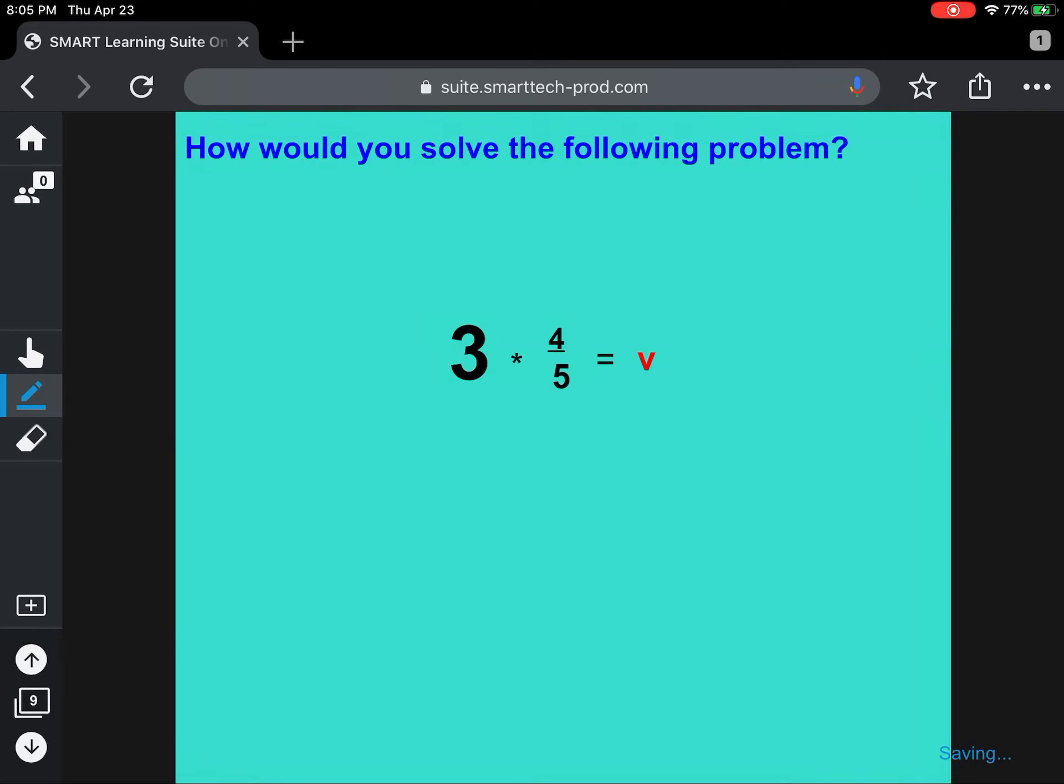Now let's just do some simple multiplying. How would you solve this problem? The easiest thing to do when multiplying a whole number by a fraction is to put the whole number over 1. Multiply the numerators, so 3 times 4 equals 12, and 1 times 5 equals 5.